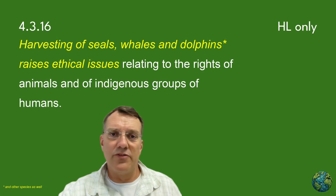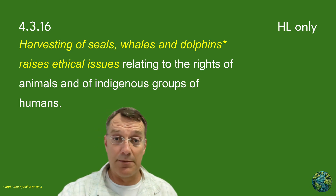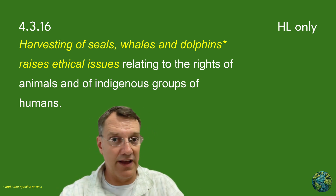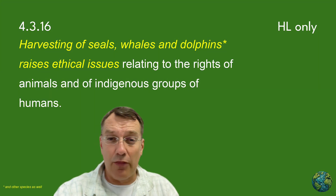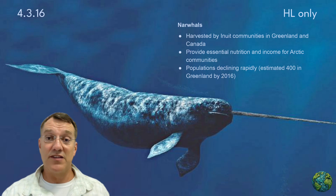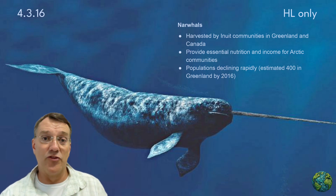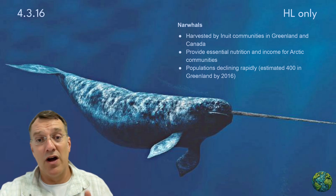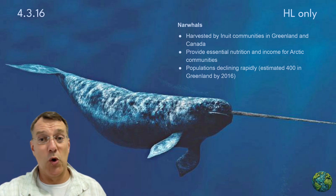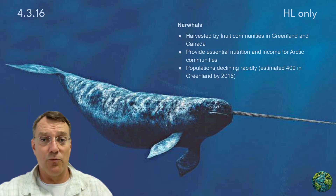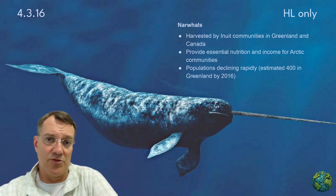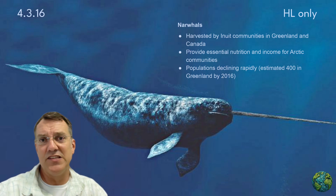Harvesting of seals, whales, dolphins, and other marine animals raises complex ethical issues that involve both animal rights and indigenous human rights. These situations require us to balance different moral perspectives and cultural values. Narwhal hunting by Inuit communities illustrates this complexity. These Arctic whales provide essential nutrition and income for indigenous communities who've hunted them sustainably for centuries. However, narwhal populations are declining rapidly, with some estimates suggesting there are only about 400 left in Greenland. This raises environmental ethics questions about subsistence rights, cultural preservation, and species conservation. How do you balance indigenous rights with conservation needs? Should traditional practices continue when species face extinction?